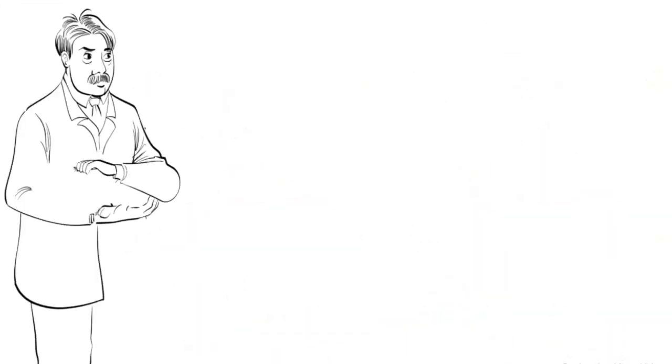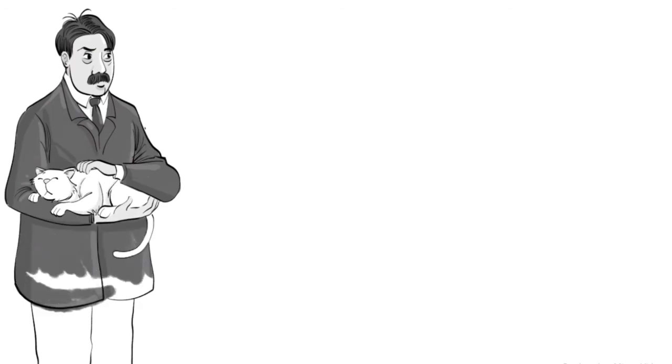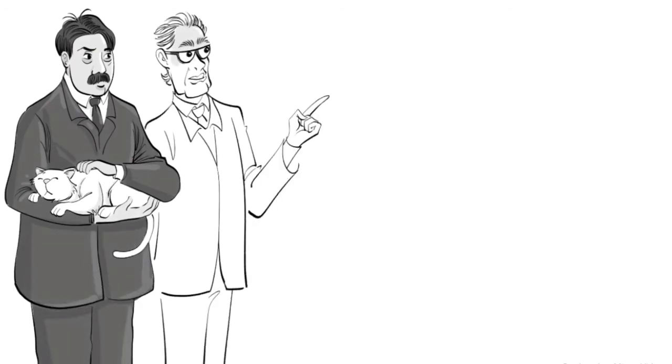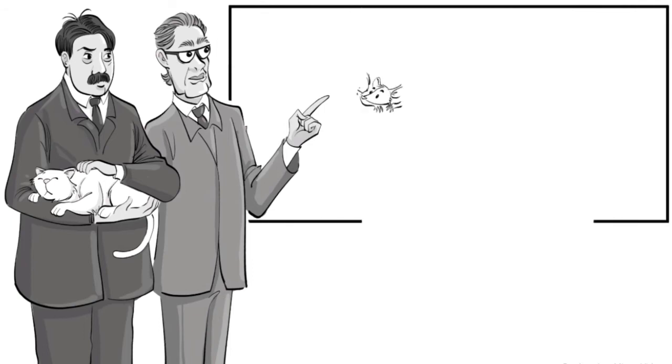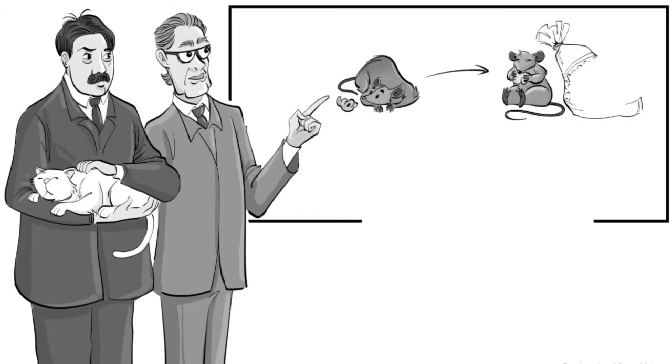Operant conditioning was first studied by Edward L. Thorndike, and later made famous by the work of B.F. Skinner. Skinner believed that organisms are doing what they do naturally, until they accidentally encounter a stimulus that creates conditioning, which results in a change in behavior.